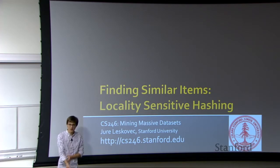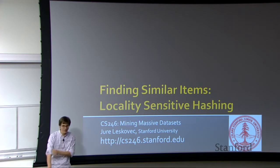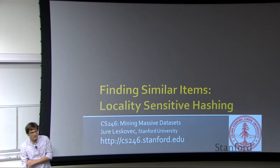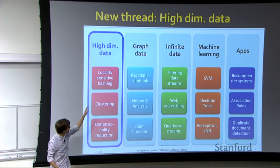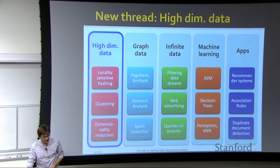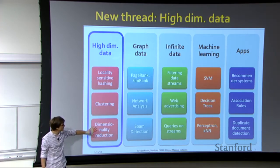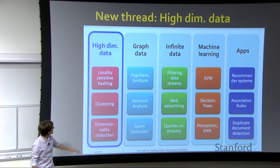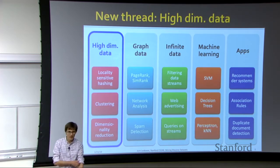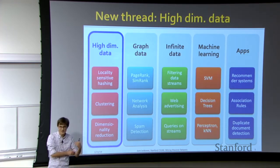The topic for today — actually the topic for two weeks — is this amazing technique called locality sensitive hashing. This is one of the cleverest uses of hash functions I've ever seen, and it's amazingly impactful and important. To remind you where we are in our course: we are talking about high dimensional data. Today we'll talk about locality sensitive hashing, then clustering and dimensionality reduction in future weeks.